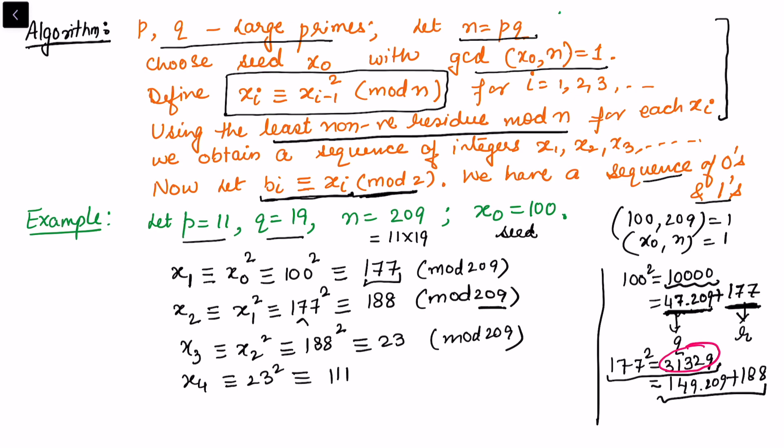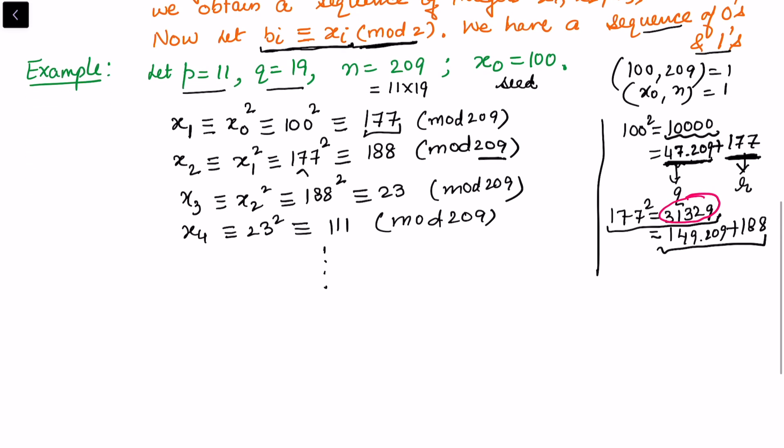188 square - this similarly comes out to be 23 mod 209. And x4, which is congruent to 23 square, is further congruent to 111 mod 209. Now continue doing like this and it generates the random numbers. So we got the random numbers - initial seed is x0, then we got 177, then we got 188, 23, 111, and so on.